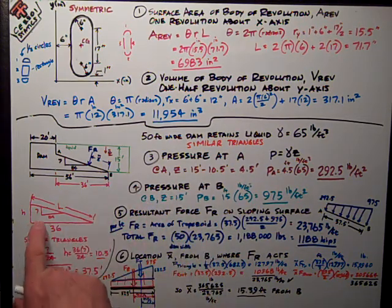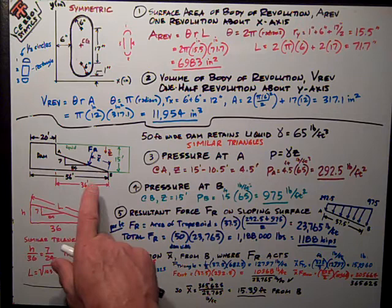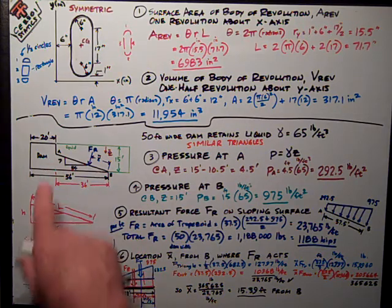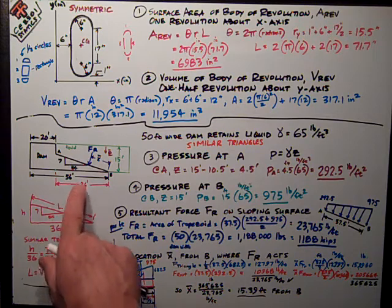By similar triangles, if I have a 7-24 slope, I can figure out the length of the horizontal part of the sloping portion, which is 56 minus 20. It gives me 36 feet down here.